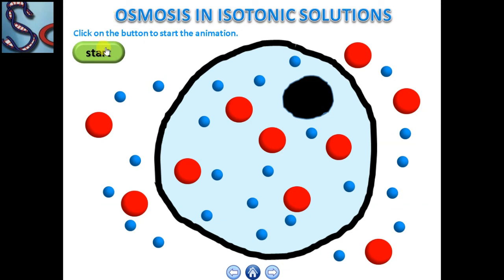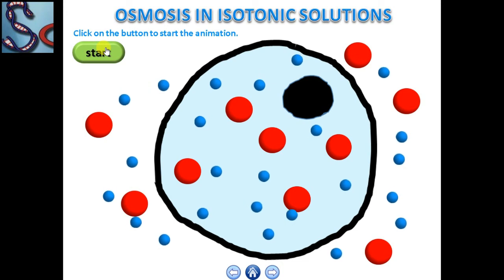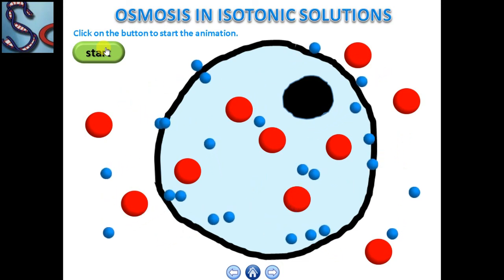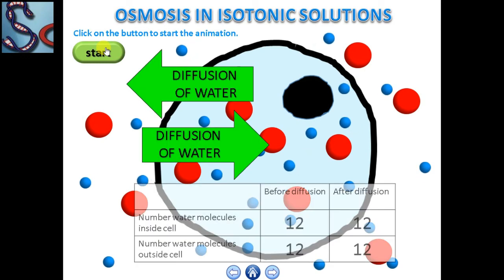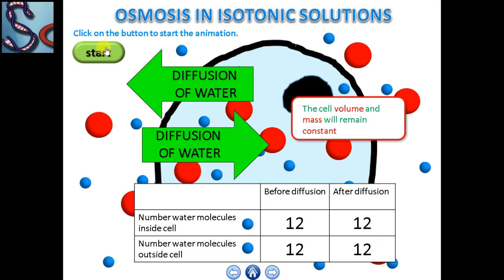This cell is in an isotonic solution — that is, there is an equal concentration of solute inside and outside the cell. We can therefore say that the concentration of water molecules is the same inside and outside the cell. The same amount of water molecules will diffuse in and out of the cell, so there is no net diffusion of water molecules in either direction. This means that the volume and mass of the cell remains constant.